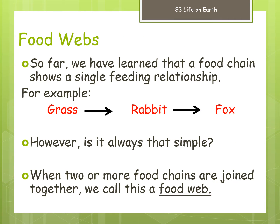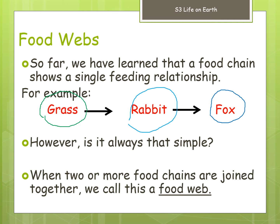Last week we looked at a food chain: grass → zebra → lion. Here's another example: grass is the producer, it's eaten by a rabbit (the primary consumer), and rabbits are eaten by foxes (the secondary consumer). However, it's not always that simple. Think about your own breakfast — even a bacon sandwich involves wheat, pig, and maybe tomato sauce. When we join more than one food chain together, we call this a food web.